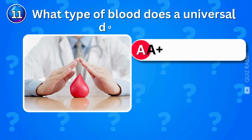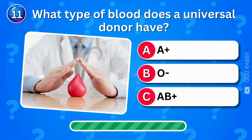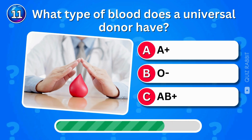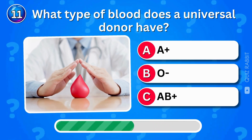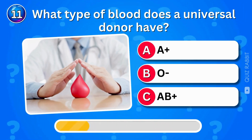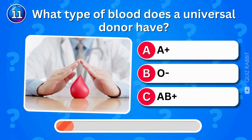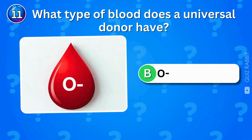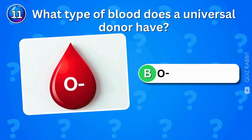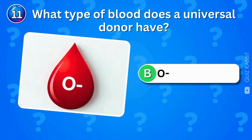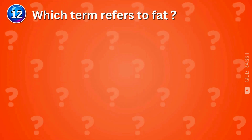What type of blood does a universal donor have? Universal donors have O-negative blood — the ultimate lifesaver in emergencies. Which term refers to fat?